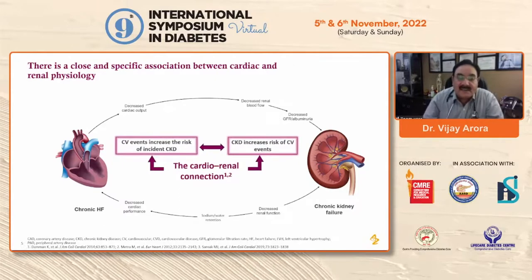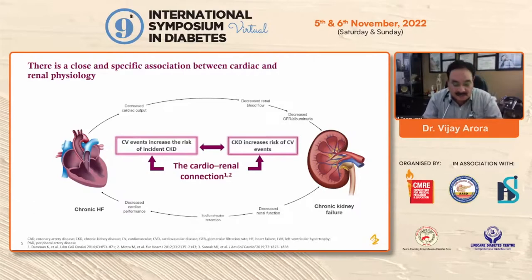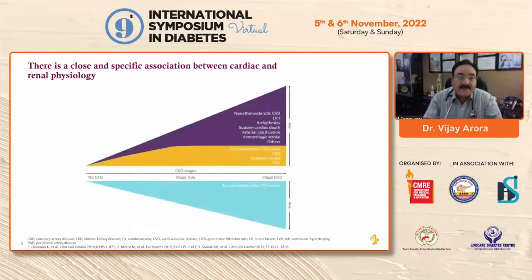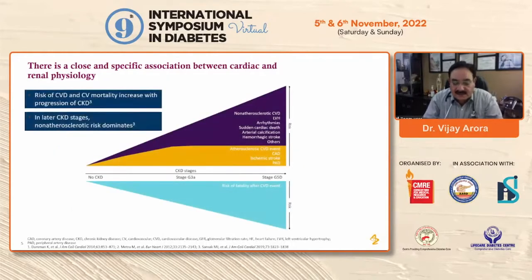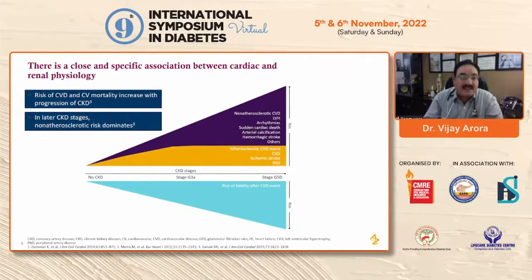CV events increase the risk of CKD, and CKD increases the risk of CV events. There is a close and specific association between cardiac and renal physiology, and the risk of CVD and CV mortality increases with progression of CKD.